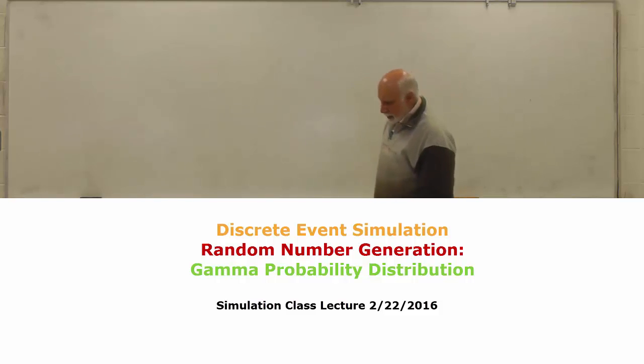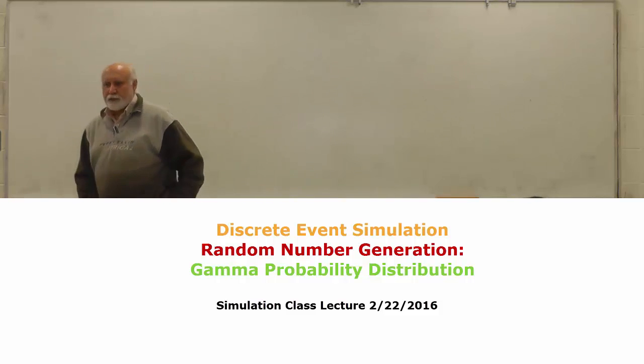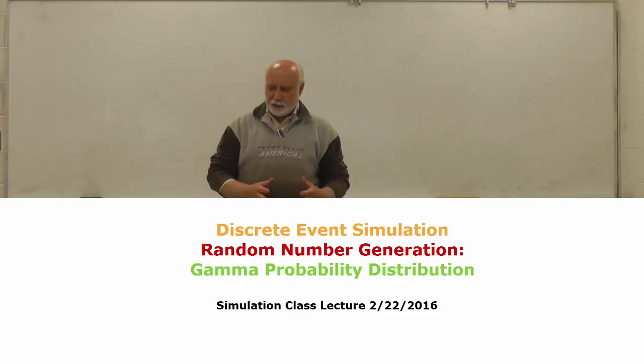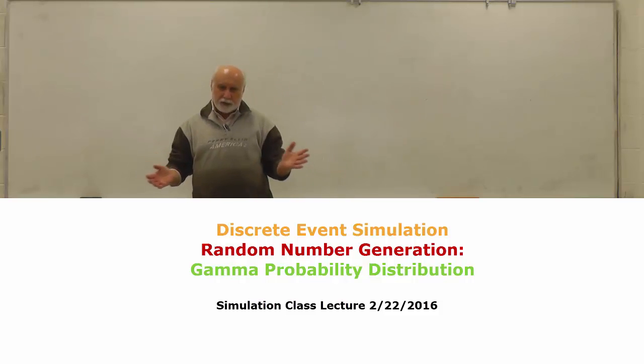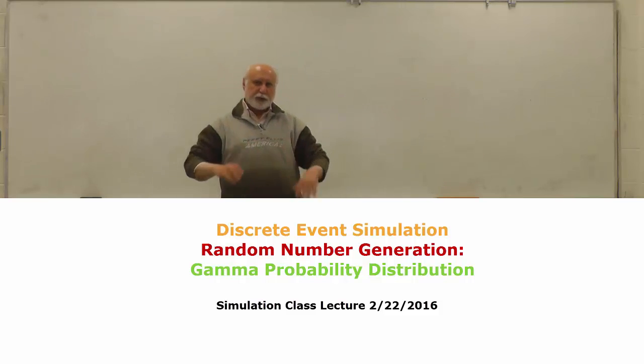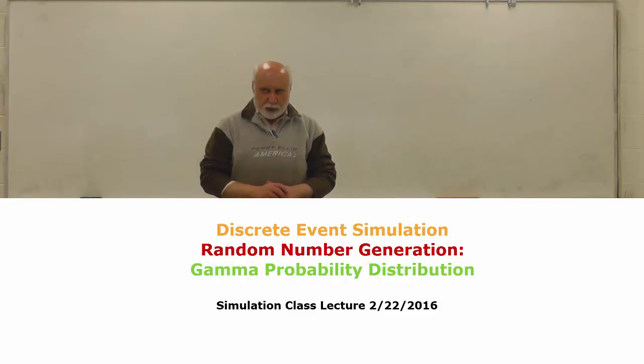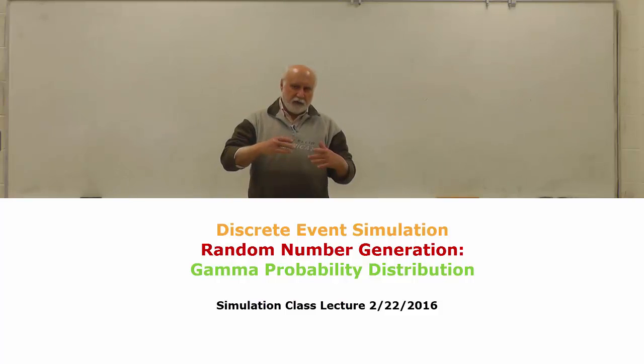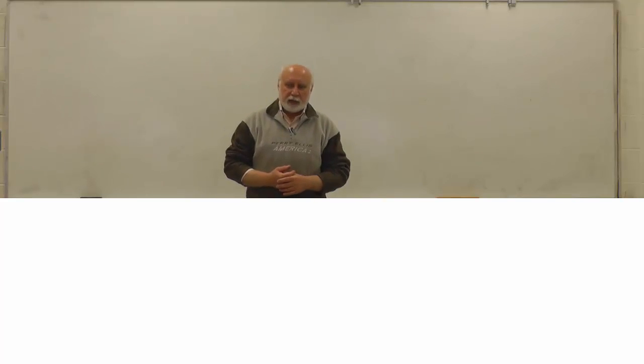We have been talking about the methods of generating random numbers. We talked about a few of the processes that are available to us. We looked at random number generation from Poisson, we looked at normal, we looked at several other methods that we can actually generate random numbers.